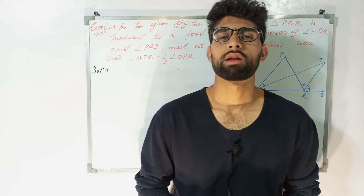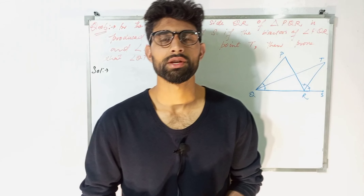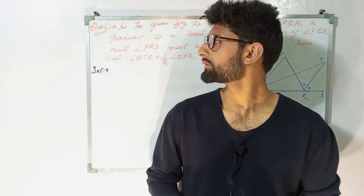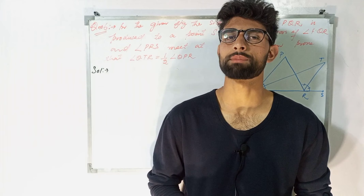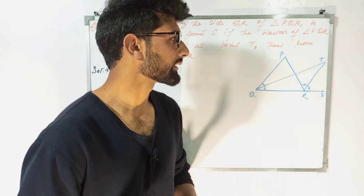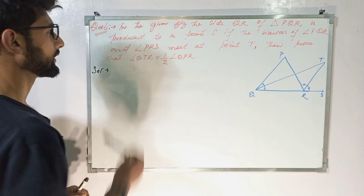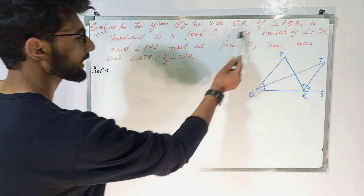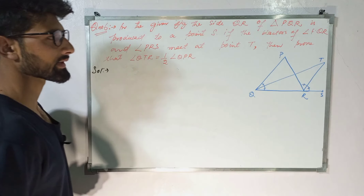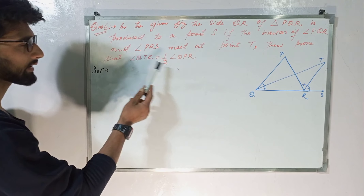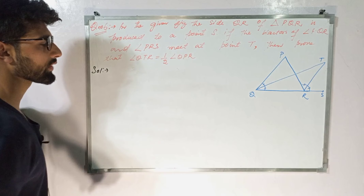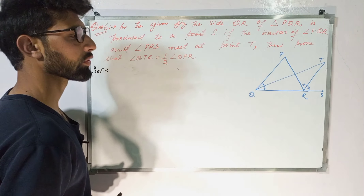Assalamu alaikum dear students, welcome back to my YouTube channel Brainstorming Knowledge. Today we have question number six, which is the last question of this chapter Lines and Angles. In the given figure, the side QR of triangle PQR is produced to a point S. If the bisectors of angle PQR and angle PRS meet at point T, then prove that angle QTR is equal to half of angle QPR.